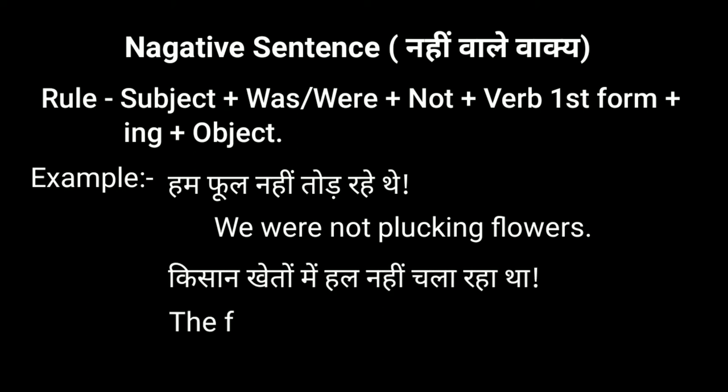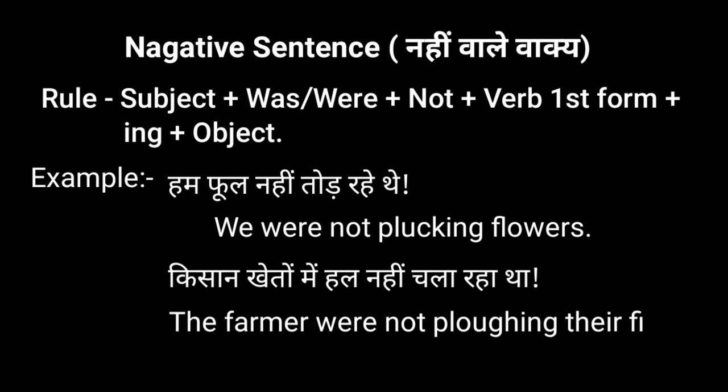Our next example: 'किसान खेतों में हल नहीं चला रहा था' — 'The farmer was not plowing his field.' In this, 'the farmer' is the subject, 'was' is the helping verb, 'not' is used for negation, 'plowing' (हल चला) is the verb first form plus ing, and the rest is the object.